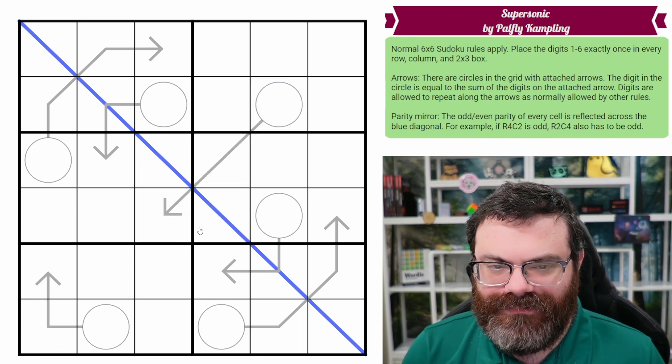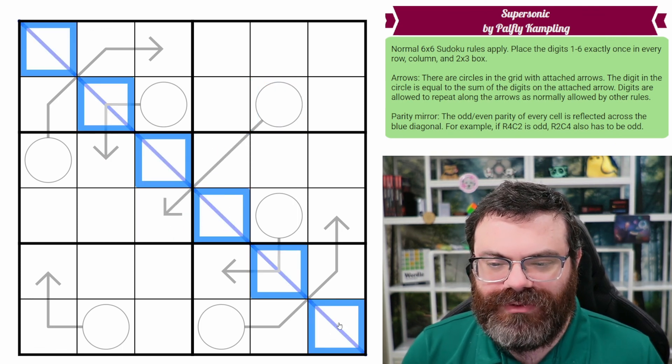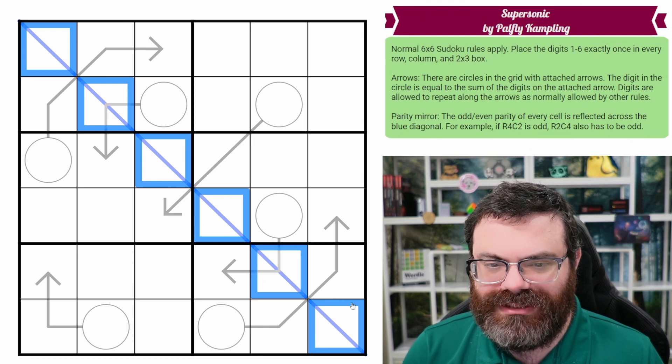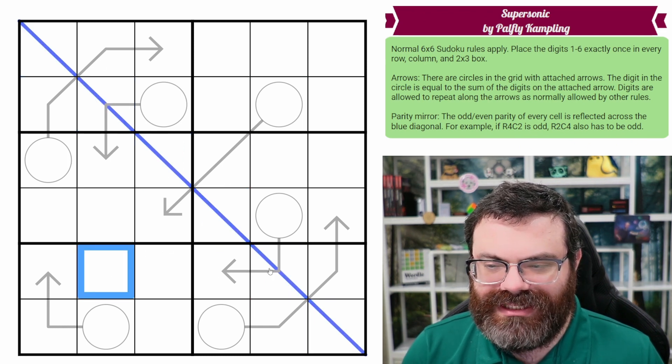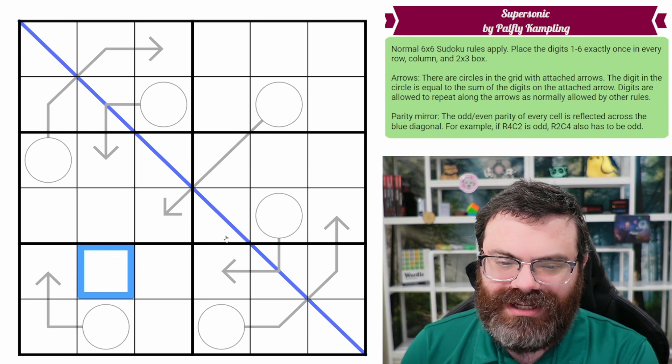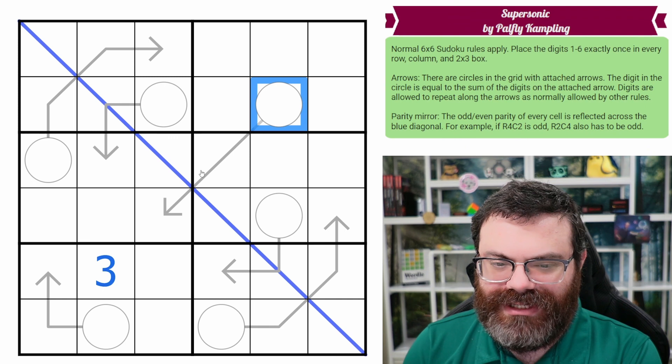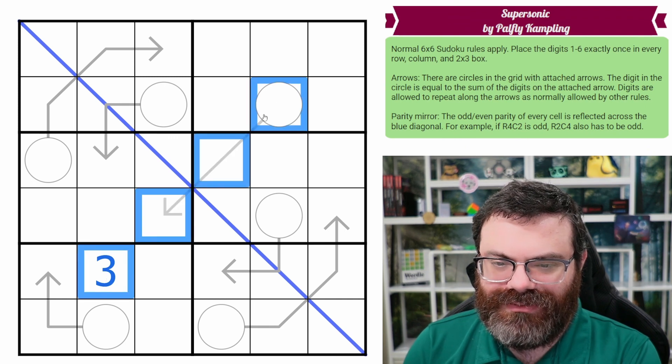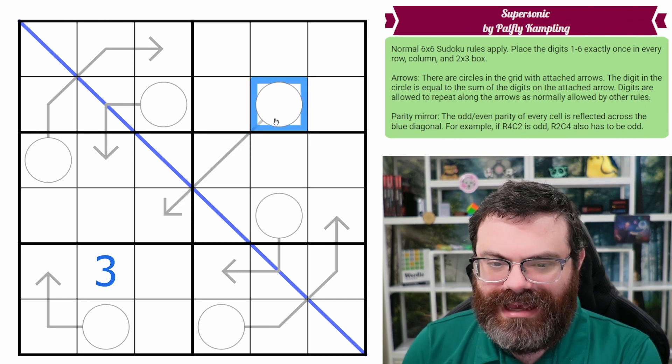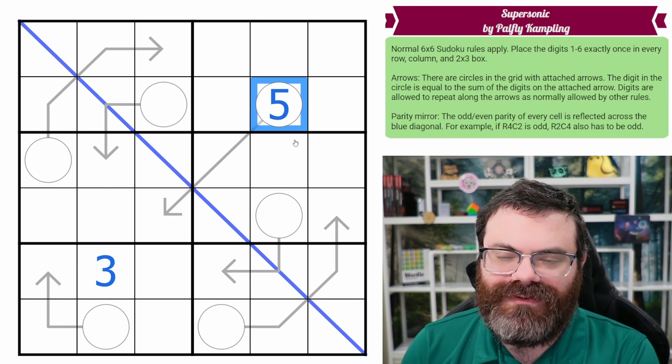Additionally, we have a parity mirror. So this blue line is what we're mirroring across, this diagonal. So this cell here, for example, let's say this was odd, like a 3. And what we do is we mirror that across that diagonal. We get to this cell here. You can see that we sort of move across the diagonal to here. And this also needs to be odd. So it could be, for example, a 5.